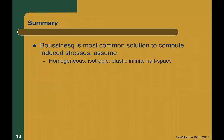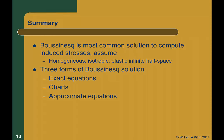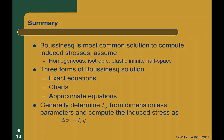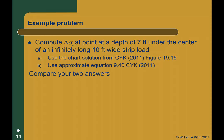So let's summarize. The Boussinesq stress distribution is the most common way to compute induced stresses and assumes we have a homogeneous, isotropic, elastic half space. The solution comes in three different forms: exact equations, charts, and approximate equations. Each solution is for a specific locus of points and a specific loading condition, so you must be careful to use the correct solution. For area loads where there is an applied surface stress q, we generally compute the stress distribution factor I sub sigma using dimensionless parameters, then compute the induced stress as the influence factor times the applied surface load q. Here is a quick practice problem that you can use to compare the chart method to the approximate method — do this before class. That's all for this webcast.